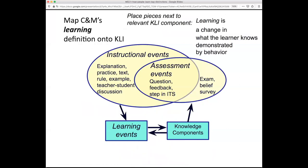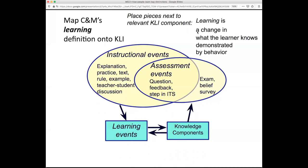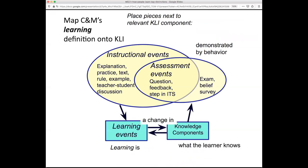Let's place the pieces of the Clark and Mayer definition of learning next to the relevant pieces in this Knowledge, Learning, and Instruction framework — the KLI framework. Learning is a change in what the learner knows, demonstrated by behavior. If you want to engage in active learning yourself, try to think about where these four pieces go. 'Learning is' — that's learning events. 'A change in' — that's the arrow suggesting a change in what learners know. 'Demonstrated by behavior' shows up in assessment events: when students answer questions, do a step in an intelligent tutoring system, take an exam, or when we're examining changes in their knowledge components around beliefs, motivations, or dispositions.